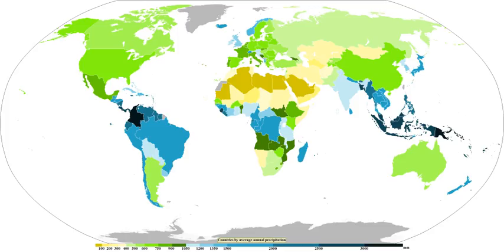The likelihood or probability of an event with a specified intensity and duration is called the return period or frequency. The intensity of a storm can be predicted for any return period and storm duration from charts based on historic data. The term '1 in 10-year storm' describes a rainfall event which is rare and is only likely to occur once every 10 years, so it has a 10% likelihood any given year. The term '1 in 100-year storm' describes a rainfall event which will occur with a likelihood of only once in a century — a 1% likelihood in any given year. As with all probability events, it is possible though unlikely to have two 1-in-100-year storms in a single year.